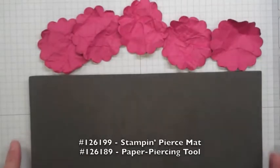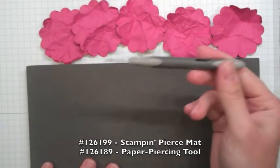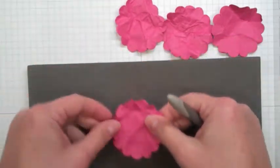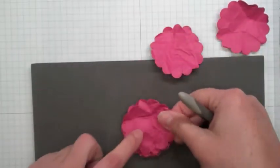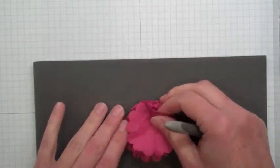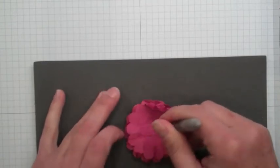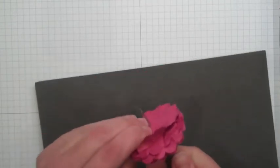Then you're going to take your paper piercing mat and your paper piercing tool. You're going to stack all five of these up and find the center the best you can and poke a hole all the way through.